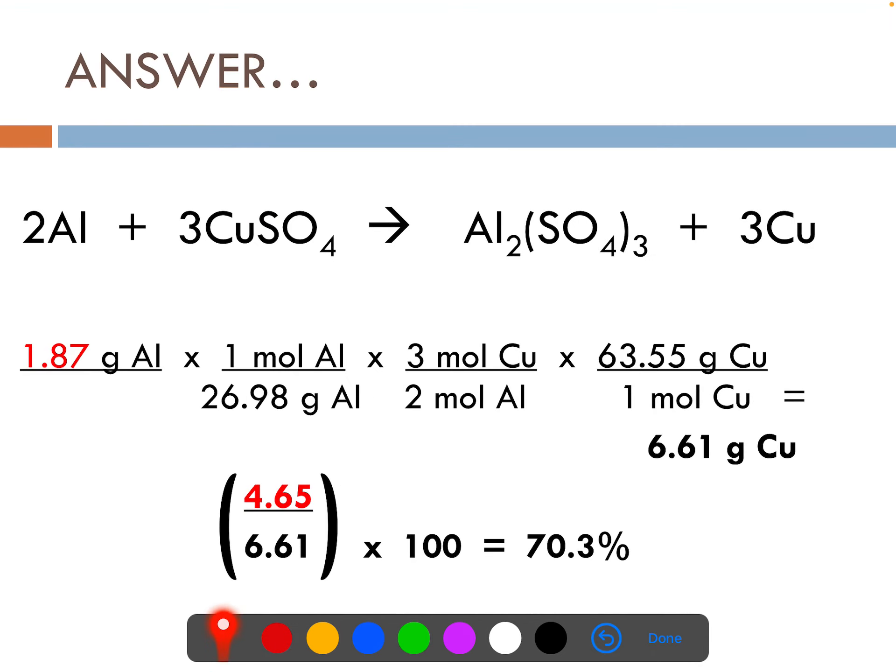So plug it into the stoichiometry problem. Here's the amount of aluminum we start with. Convert grams into moles. Balance chemical formula. Moles of aluminum to moles of copper. And you should finish off with 6.61 grams of copper. This is what you theoretically should make.